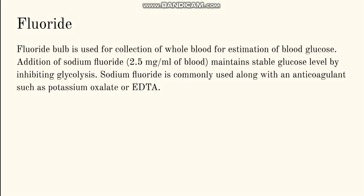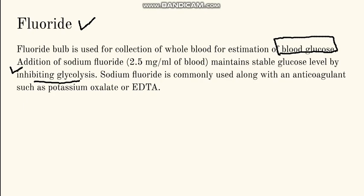Fluoride is not an anticoagulant; it is a special ingredient added along with an anticoagulant, mostly EDTA. It is used for blood glucose estimation. Fluoride inhibits glycolysis — if you store blood without it, the blood glucose level will decrease due to consumption of glucose by the RBCs. So sodium fluoride inhibits glycolysis so that the blood glucose level you estimate is accurate.